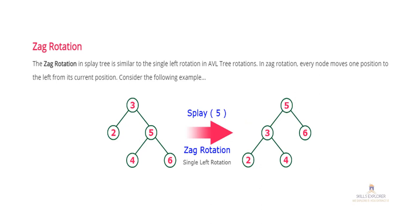The next rotation is Zag rotation. Zag rotation is similar to a single left rotation. Zag means left, so in Zag rotation every node moves one position to the left from its current position. In this example, you need to splay node 5. Node 5 is the right child of parent 3. Since it is the right child, move the parent to the opposite side — left. So rotate 3 to the left. After Zag rotation, 5 becomes the parent and 3 becomes its left child.